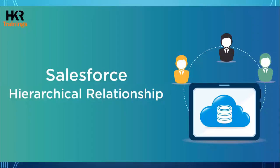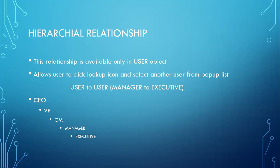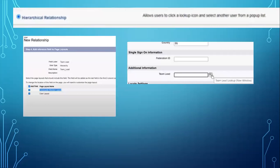Coming to hierarchical relationship. Hierarchical relationship is something that we can use only for the user object — that is, user-to-user we can link it. Usually, hierarchical relationship is used in organizations wherein approvals can be given. Here in the hierarchy: executive to manager, manager to GM, GM to VP, and then to CEO. A hierarchical relationship is created from the bottom up so that approvals can be easily processed to avoid any kind of misuse. This is the process of creating a hierarchical relationship in the user object.